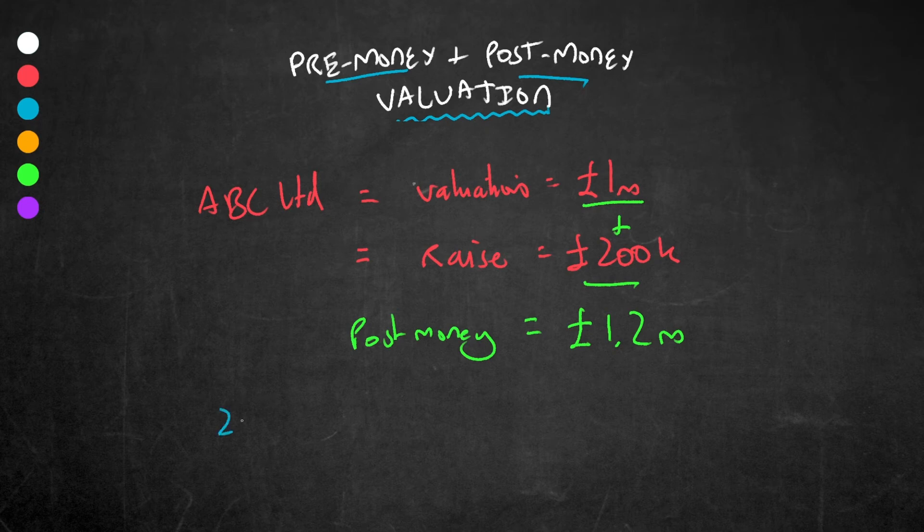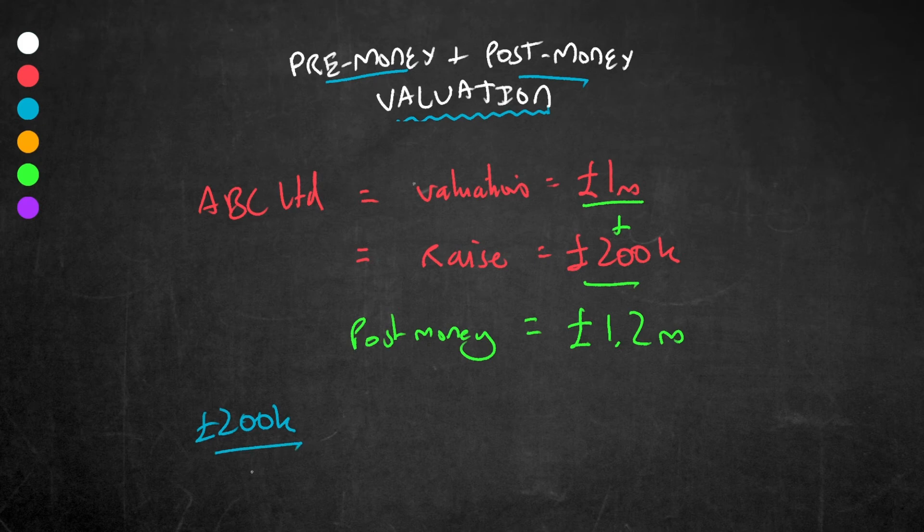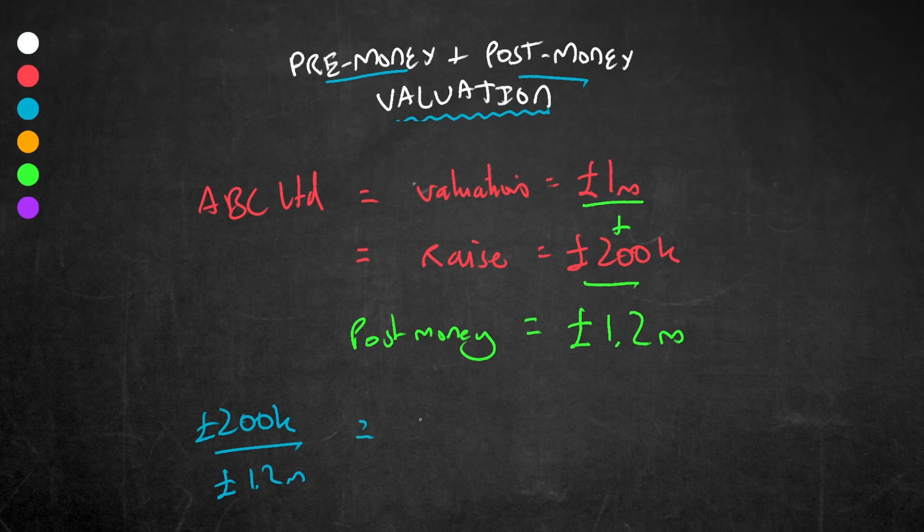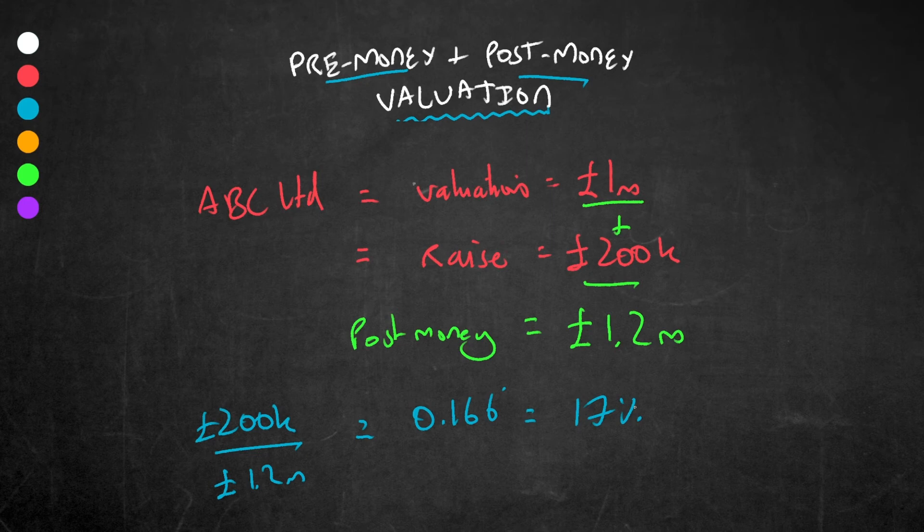The new investor put in 200,000 pounds. What you have to do is divide 200,000 by the post-money valuation of 1.2 million, which will give you 0.166 recurring, or in other words, let's round it up to 17%. So that new investor now owns 17% of the business.